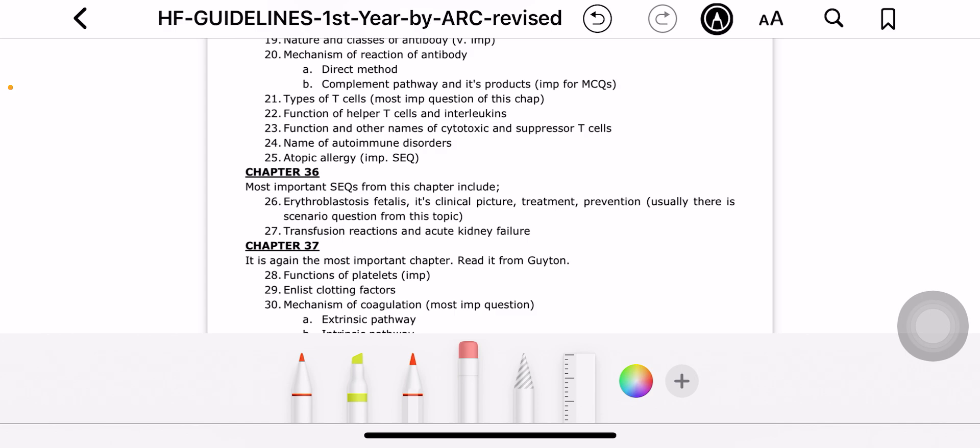TPA - tissue plasminogen activator - is important. These are important things. Then there are conditions that cause excessive bleeding in humans. First, you should know their names. Then which factors does vitamin K play a role in? Which are the vitamin K dependent clotting factors? They are ten, nine, seven, and two. You should know these. How does vitamin K play a role in clotting? You should know this.